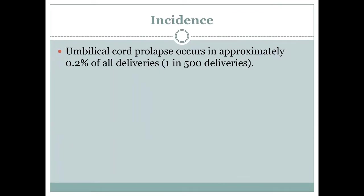The incidence of cord prolapse is approximately 0.2% of all deliveries — that's 1 in 500 deliveries.